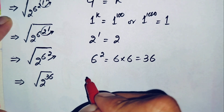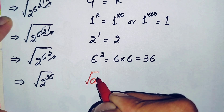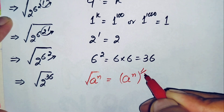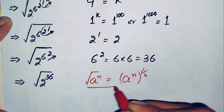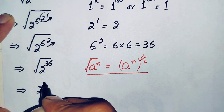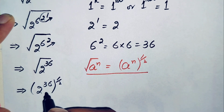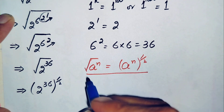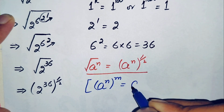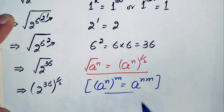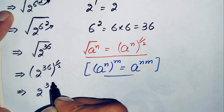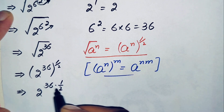Now we use the result that the square root of any exponential number a raised to power n can be written as a raised to power n, all raised to power one-half. Using this result, the expression becomes 2 raised to power 36, all raised to power one-half. We then apply the exponential property that (a^n)^m equals a^(n×m), multiplying the powers 36 and one-half.